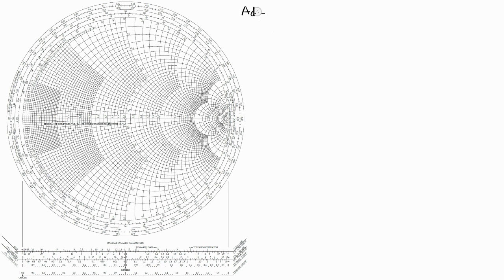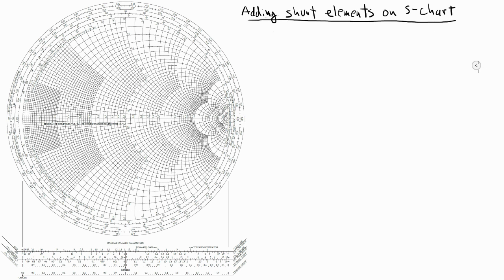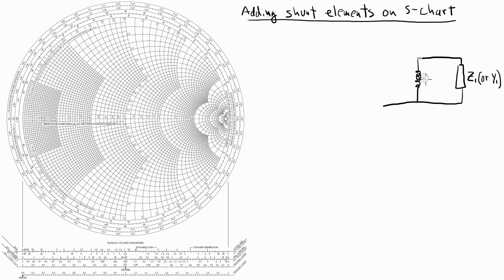In this video, we're going to learn the general technique of adding shunt elements on the Smith chart. To illustrate the technique, I'm going to draw a little circuit, beginning with my load impedance Z1, which can also be looked at as an admittance Y1. Then in shunt with my load impedance, I'm going to place an inductor, which has a reactance equal to XA. My goal is to find the input impedance to the circuit, which I'll call Z2 or Y2.